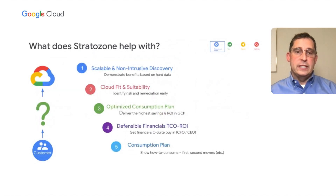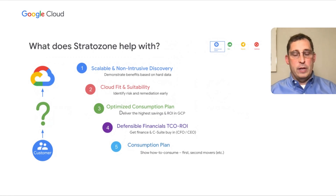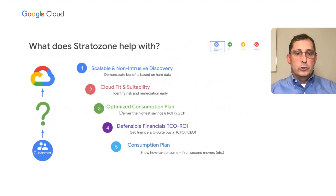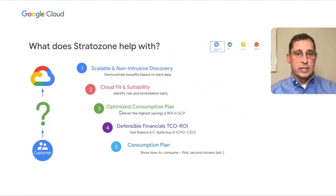The first step is the assessment phase. For this assessment phase, Google has a tool called Stratazone. Stratazone enables you to do five things as part of your assessment. First and foremost, it helps you discover what workloads, applications, and virtual machines you have that you want to migrate to the cloud and build an inventory as a place to start and a baseline.